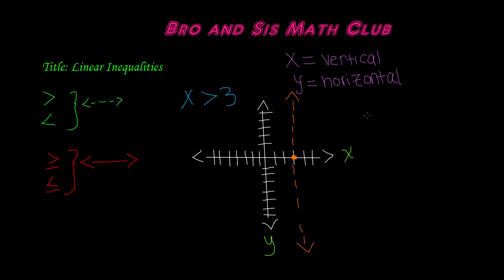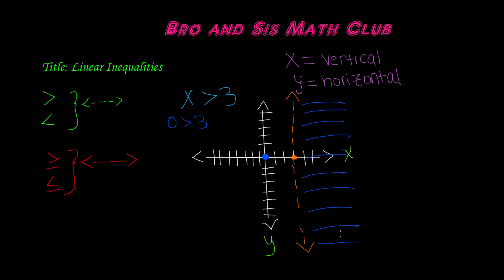Now remember, when you're graphing a linear inequality, it also has to be shaded to show where the solutions of the inequality lie. We can always use a test point to find that. Most people tend to use the origin as the test point. The origin is the middle of the graph, which is (0, 0). So just ask yourself: if x has the value of 0, then is 0 greater than 3? Obviously, 0 is not greater than 3, so that means this is not the solution of this inequality. Any solutions on the left side of this line do not hold a solution to this inequality. That means we need to shade on the opposite side, which is the right side of the line. So all the solutions to this inequality lie on the right side of this line — the value of x can be any point on the right side.